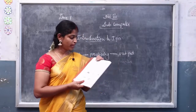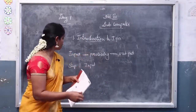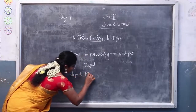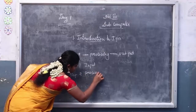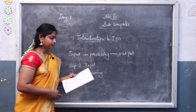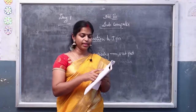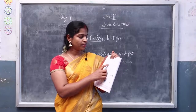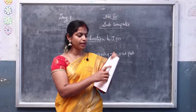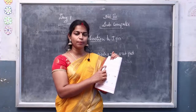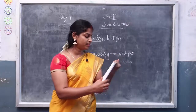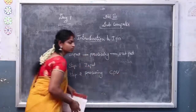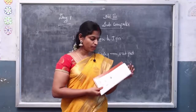Step two: processing. Processing converts input into meaningful information or result. The process of converting input into output is done by a processing device. CPU is the computer's only processing device.